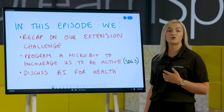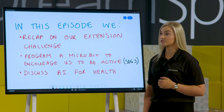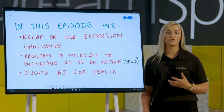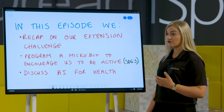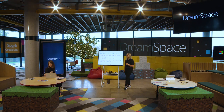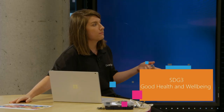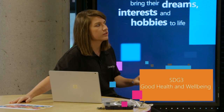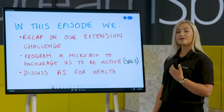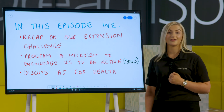In today's episode, we're going to recap over our extension challenge from the previous episode. Then we're going to create a program that encourages us to be active, which links with our third global goal — good health and wellbeing — which is one of the focus goals for the Do Your Bit Challenge. And finally, we're going to discuss AI for health.